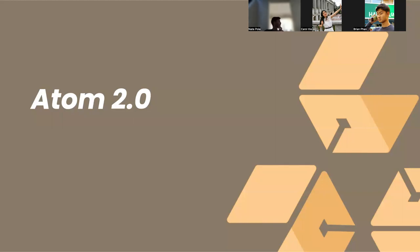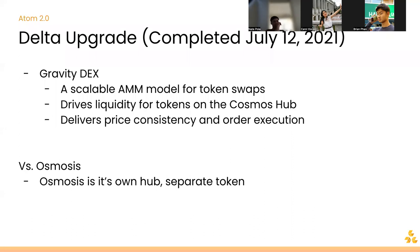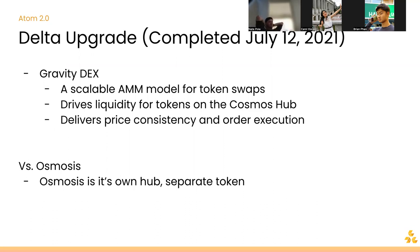Moving on to a few updates I see a lot of potential in. First, the Gravity DEX — a pretty standard DEX. There's the idea of Cosmos being blockchain 3.0 and the comparison: Gravity DEX is much more traditional, whereas Osmosis has its own hub token and is more innovative. Gravity DEX is your standard order book model with AMM for token swaps.